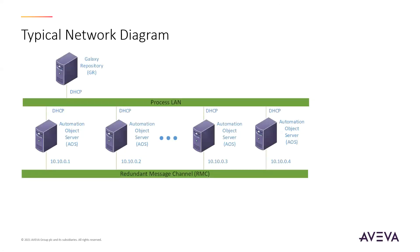In this simplified network diagram illustrating the redundant message channel concept, we have four platforms each connected to a process LAN. That process LAN typically has IP addresses assigned by a DHCP server. The redundant message channel uses a separate set of NICs with manually configured IP addresses. The IP address assigned to the platform tells it which NIC card should be used to find the RMC network — typically using a 10.10.0 IP address naming scheme on the RMC.